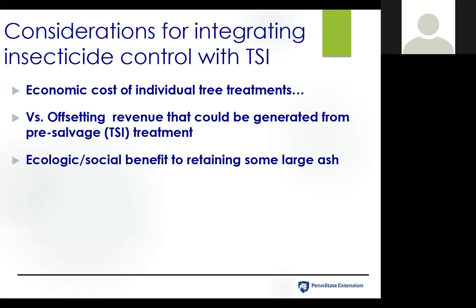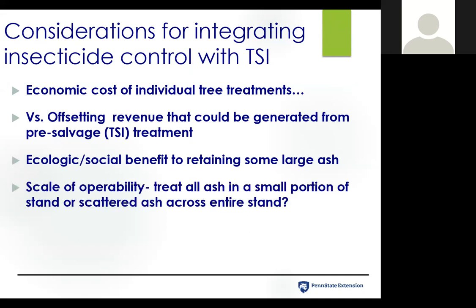Another consideration is the scale of operability. If you're working on a property that's a thousand acres, are you really going to be able to invest in treating a small population of ash? You might consider either partitioning off a small portion of the stand to treat with insecticides to retain that ash component, or perhaps scattering those insecticide treatments across the entire stand. There is some ecological benefit to scattering those insecticide treatments across the stand, so that you can perhaps have some ash regeneration and at least an ash overstory in the future.